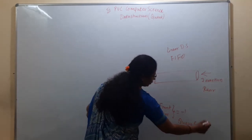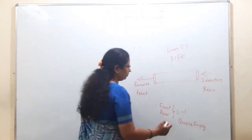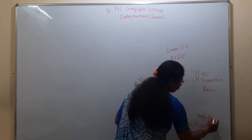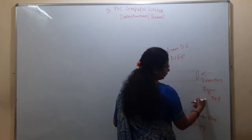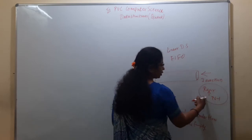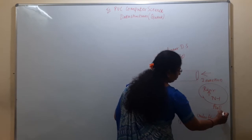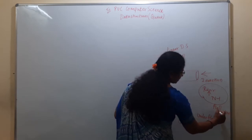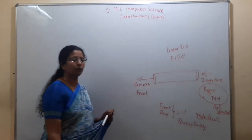This is very important to remember. Empty queue means underflow. If the rear pointer reaches to N minus 1, the queue is full. Full means overflow.